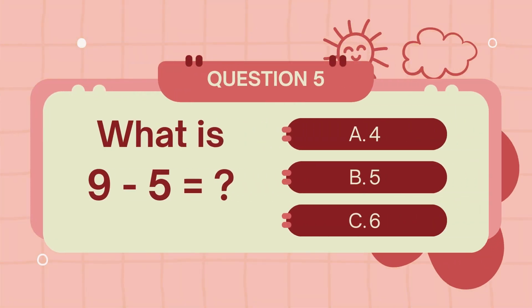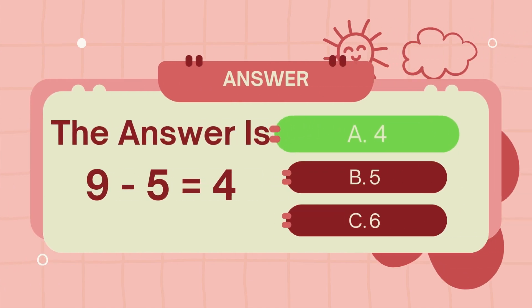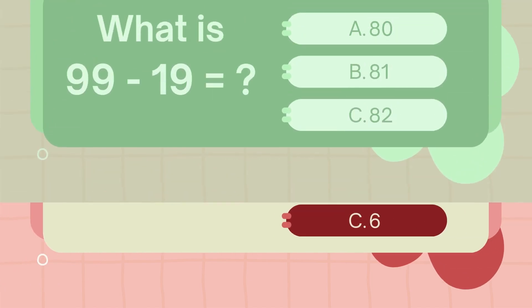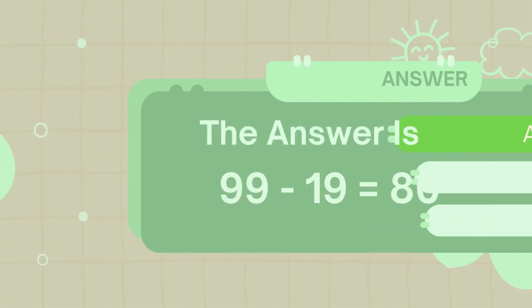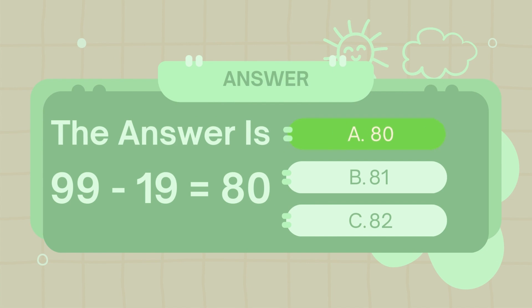What is 9 minus 5? The answer is 4. What is 99 minus 19? The answer is 8.